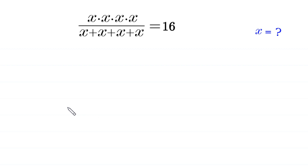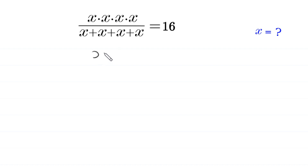Hello, welcome! We need to solve this algebra equation: x times x times x times x, divided by x plus x plus x plus x, is equal to 16. We need to find all possible values of x. So x times x times x times x becomes x to the power 4, divided by x plus x plus x plus x, which becomes 4 times x, is equal to 16.